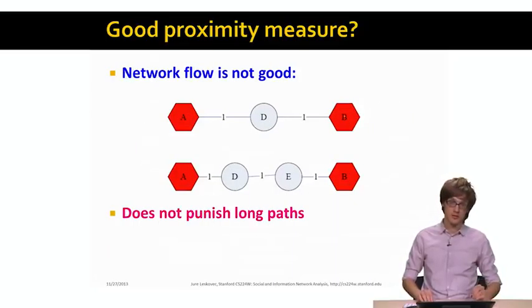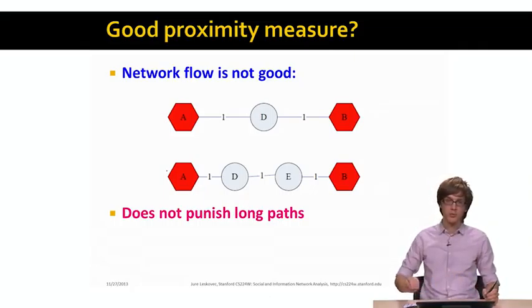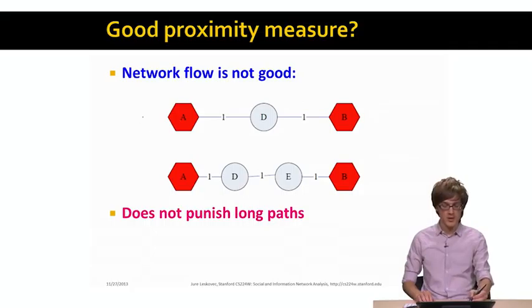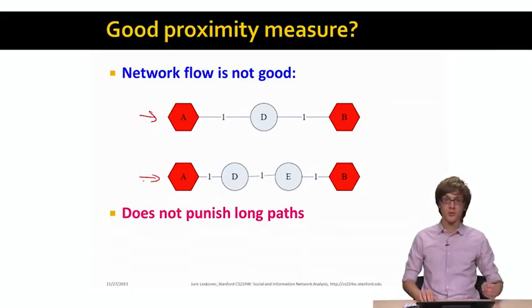Another thing we could do is to say, how much network flow can be pushed between nodes A and B? The problem is that even this is not too good a solution to intuitively capture the notion of similarity or proximity of nodes in a graph. The problem is that we can have very long chains and they don't get penalized. In the case I have here, both nodes A and B, we are able to push one unit of flow between them, even though in the first case we would intuitively say that nodes A and B are closer or their proximity is better than in the second case. So the problem with network flows is that it doesn't capture long paths.